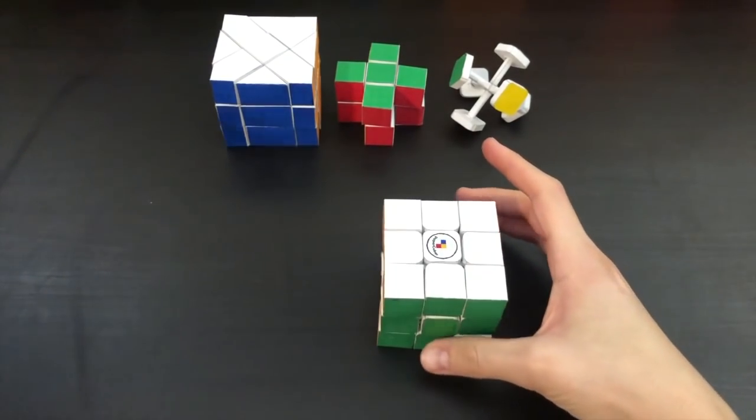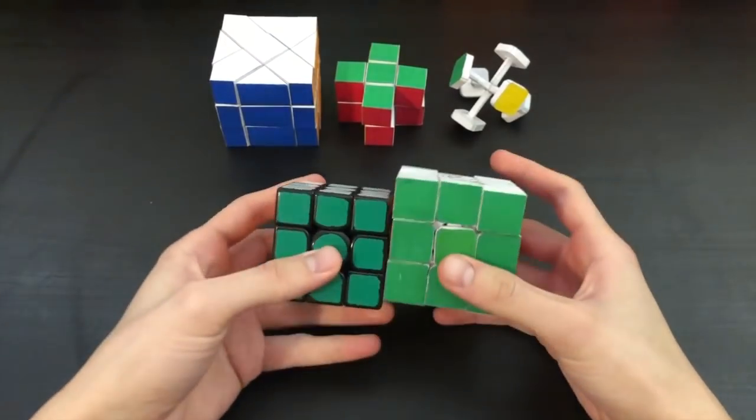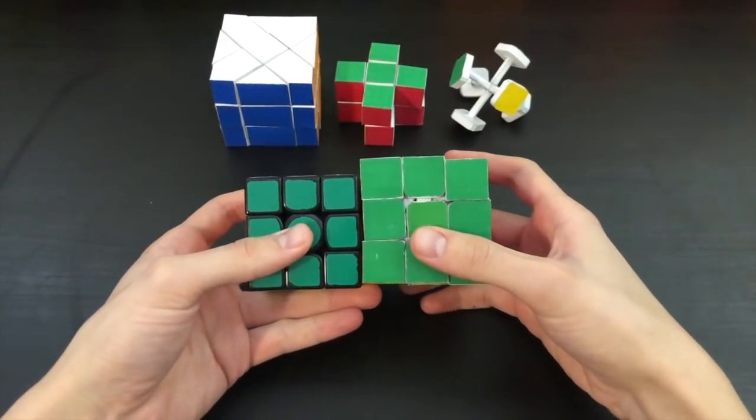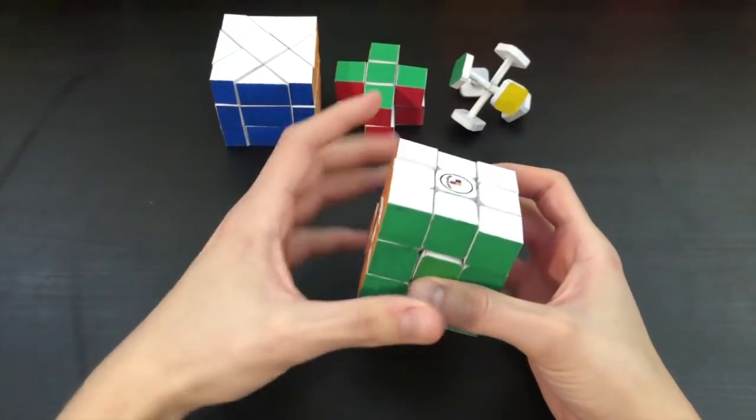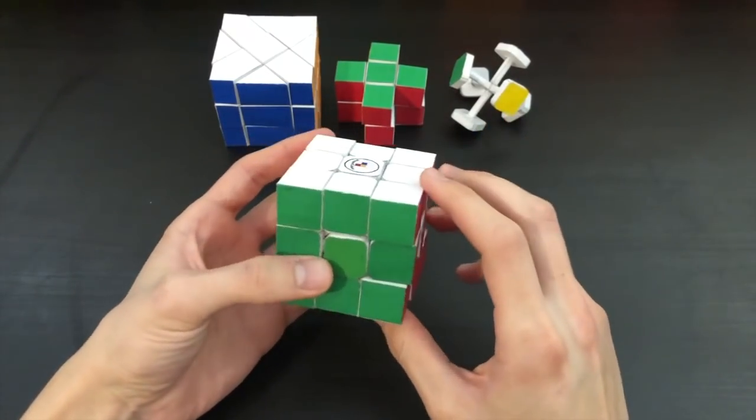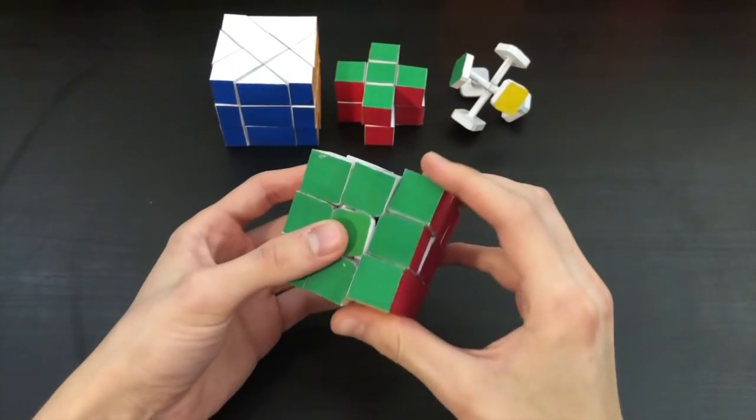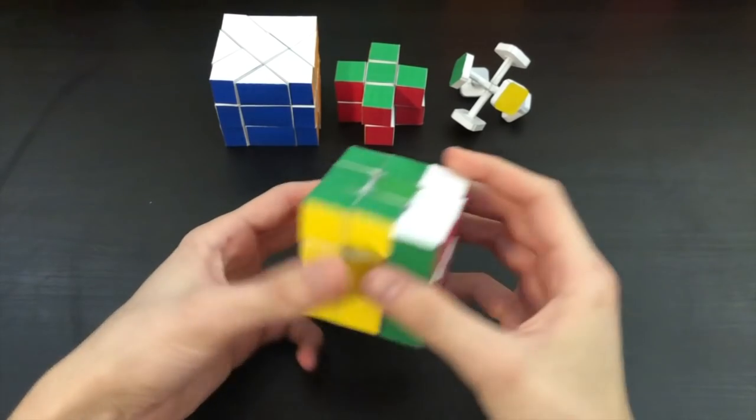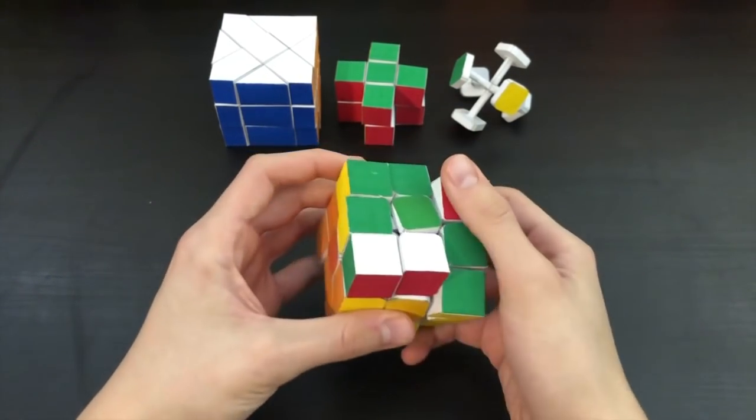And just a quick size comparison to a normal 3x3. This is a Gan Air SM. It's a little bit bigger but this is made completely from paper. We'll take a look at the pieces hopefully if I can get them off carefully. But let's go ahead and do first turns and I'll do them very carefully.